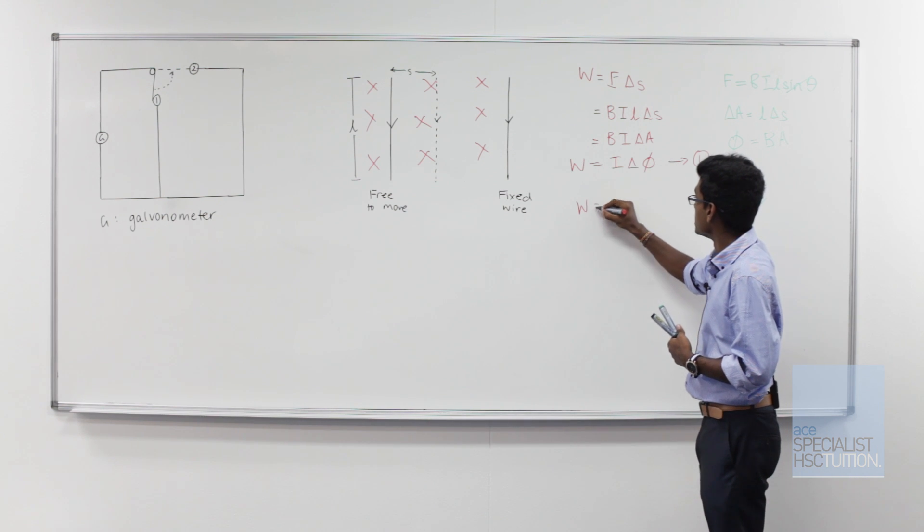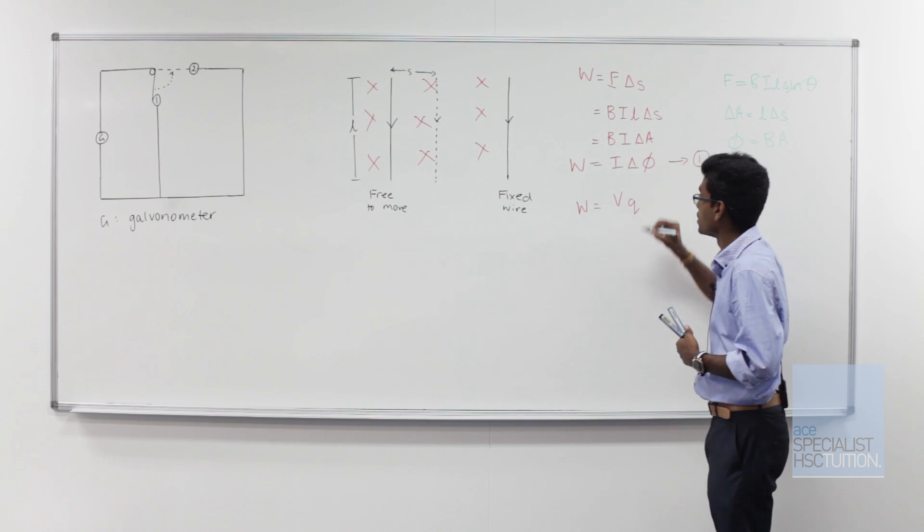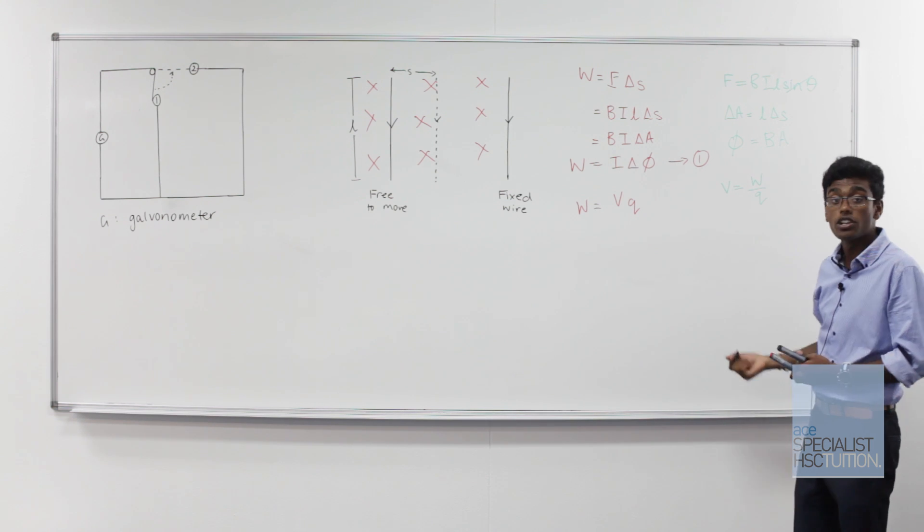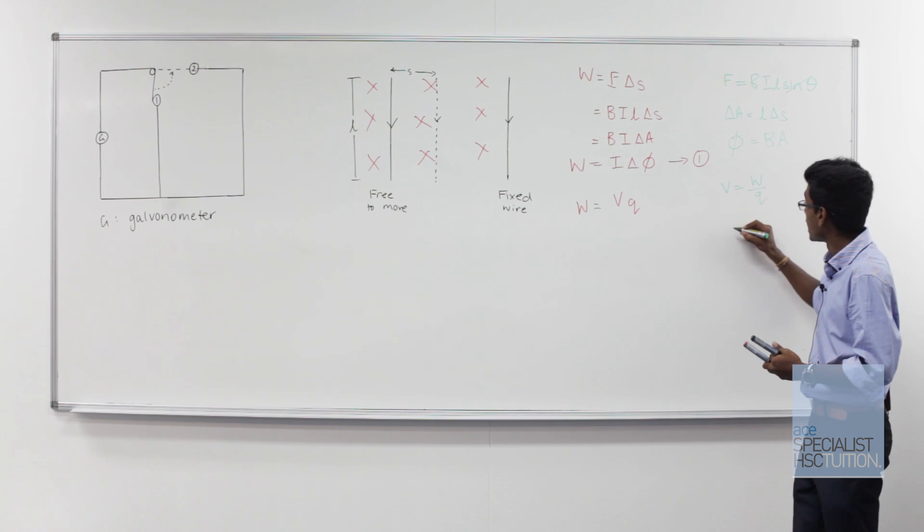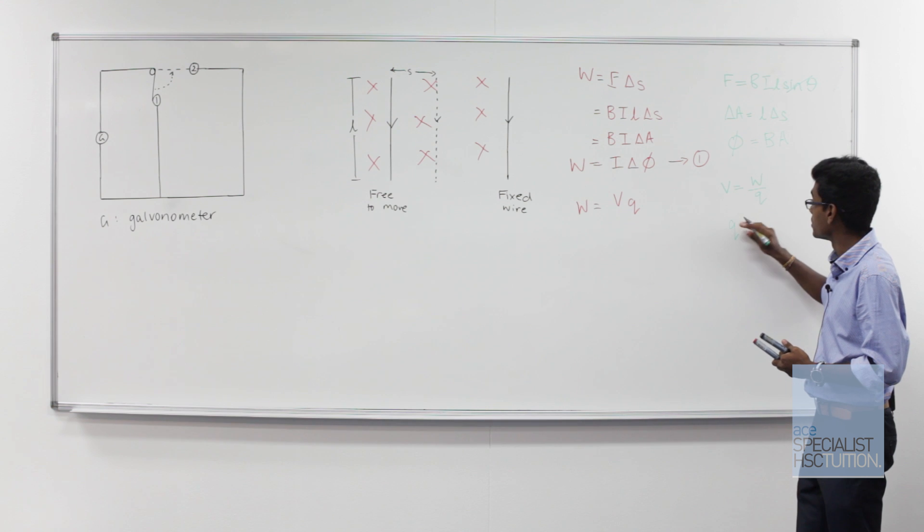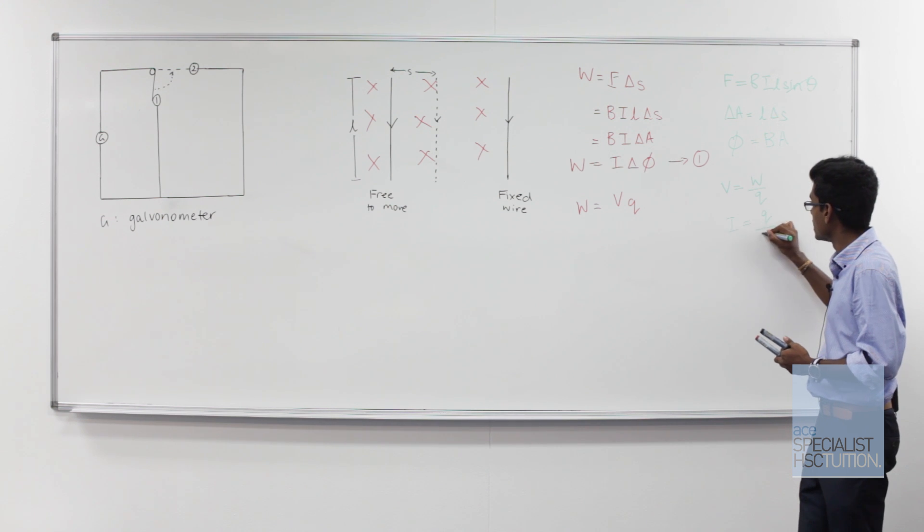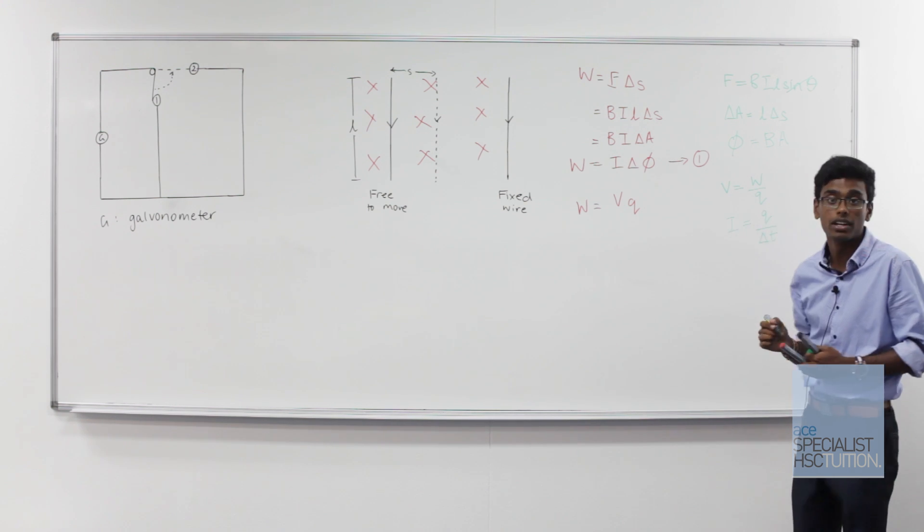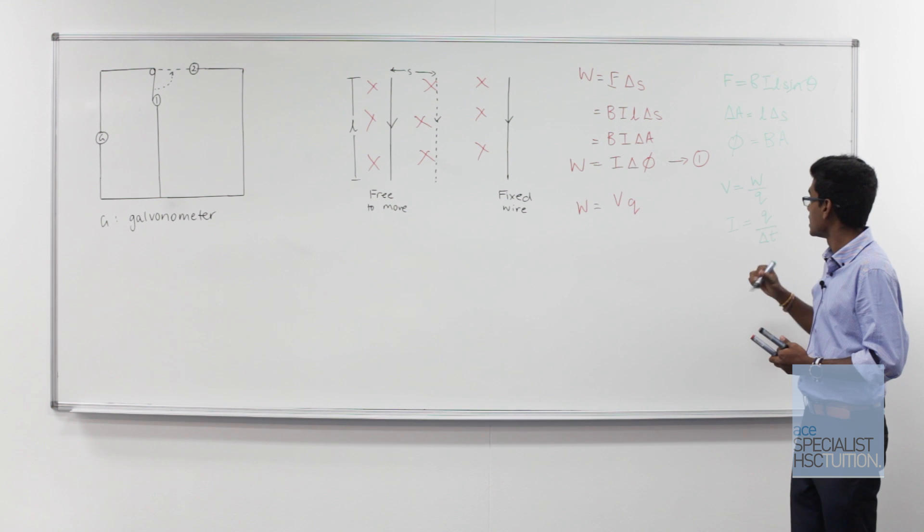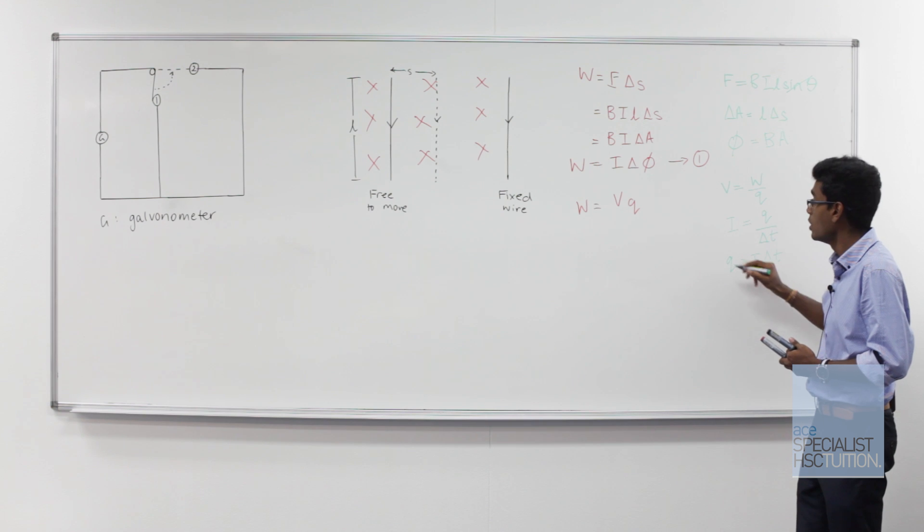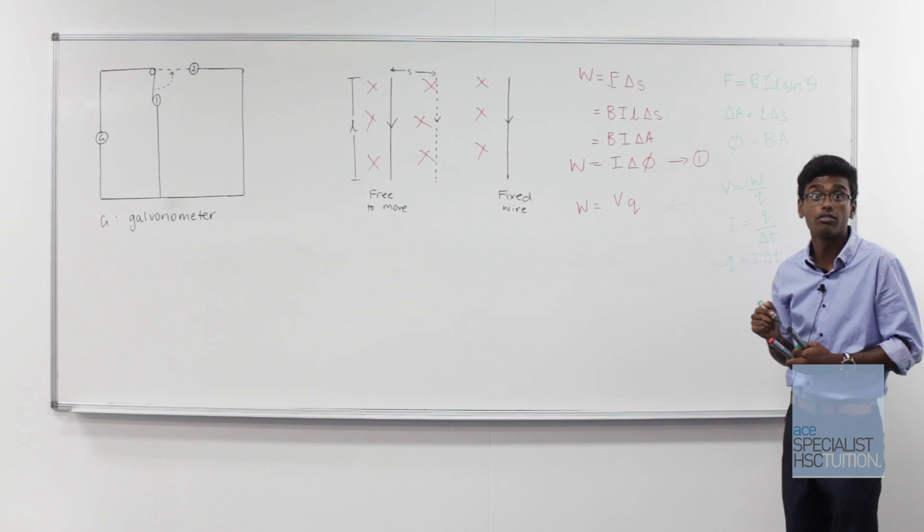W is equal to V times q. We also know from our prelim physics that current is equal to the change in charge over the change in time. So charge is equal to current times change in time. We'll sub that into our formula.